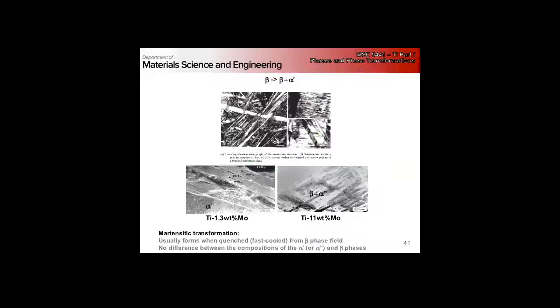These micrographs show fast cooling, athermal transformation. We need to miss the nose of the diffusive TTT curve — completely analogous to what we learned from steel, very much transferable. The key thing to remember: this is a martensite, so there's initially no compositional difference between the beta and the martensite phase. There's no partitioning happening here — this is completely a shear, military transformation.